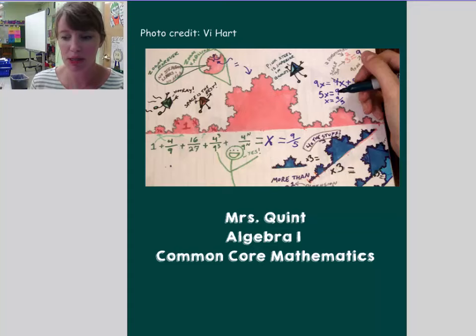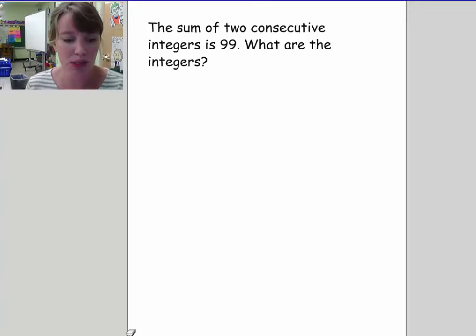Welcome back. Today we're going to talk about consecutive integer problems. So let's start out with a relatively easy one. The sum of two consecutive integers is 99. What are the integers?